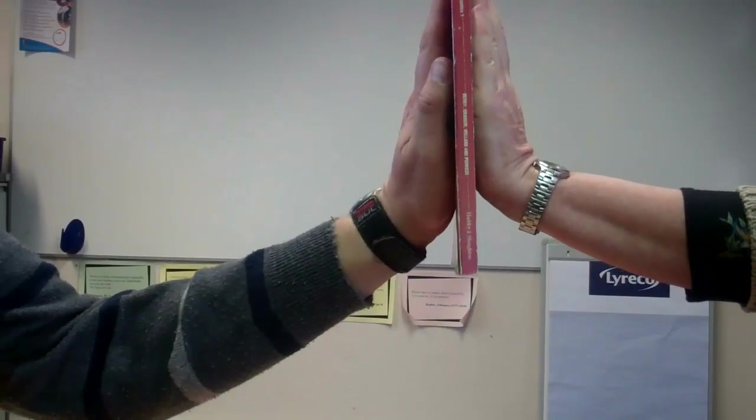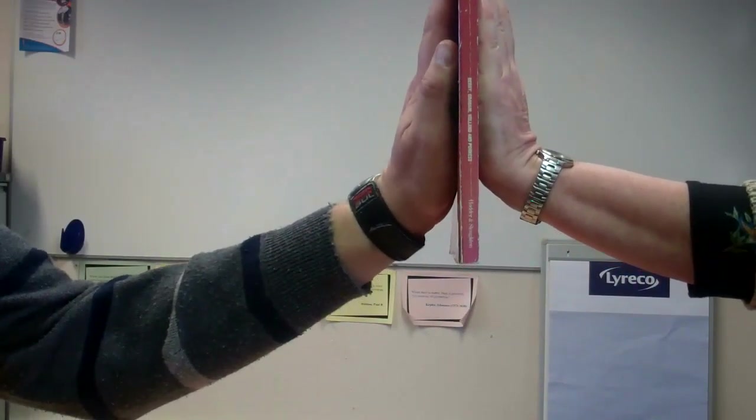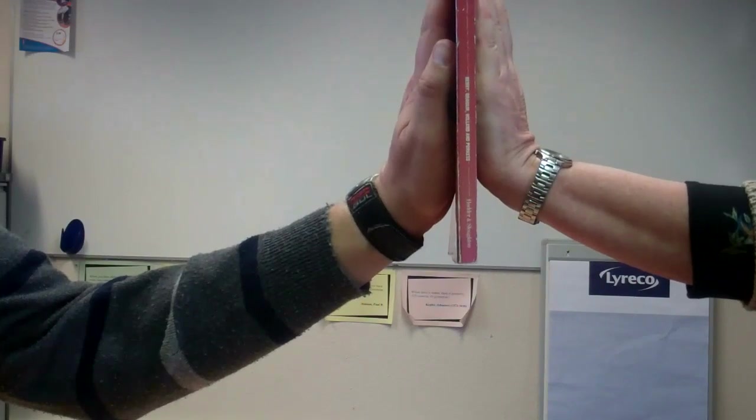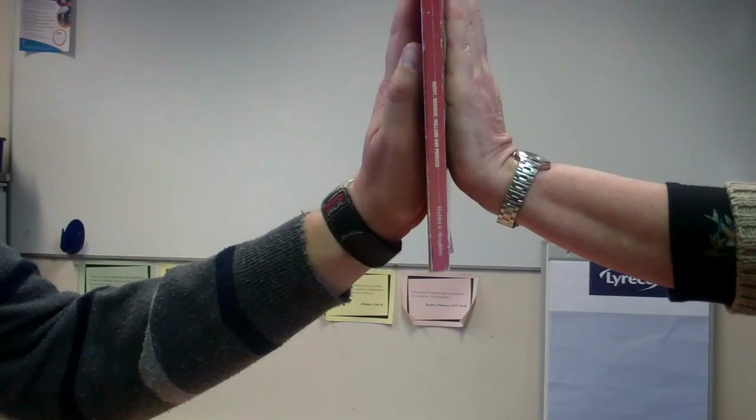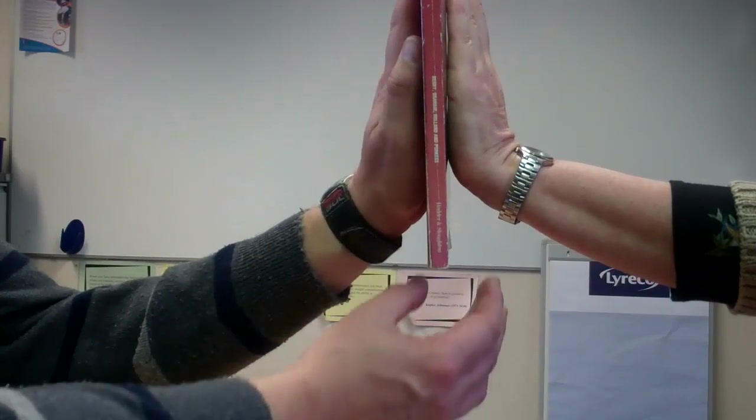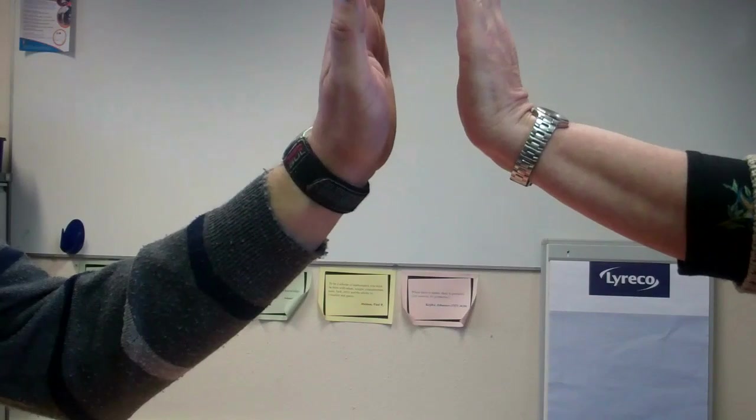Okay, here we've got two people who are doing a sort of a high five with a mechanics book between their hands. Now, at the moment, they're providing very little pressure on the sides. We're going to push just as gently as we can without the book dropping. And if I give a little tug on the bottom, you can see that the book drops down very easily.